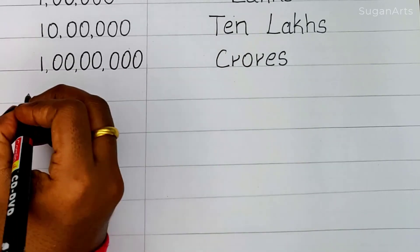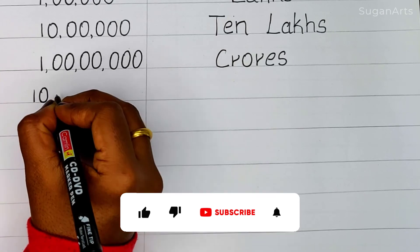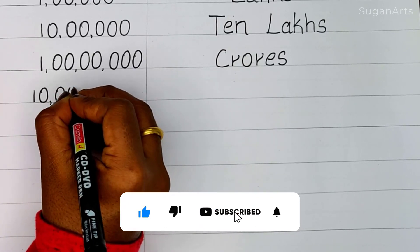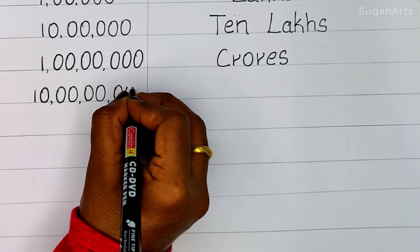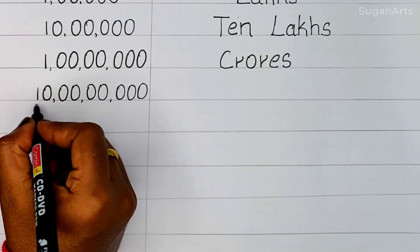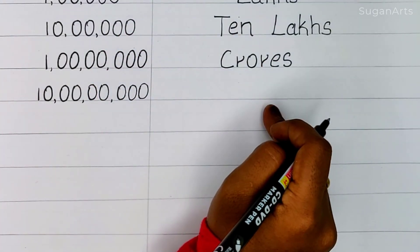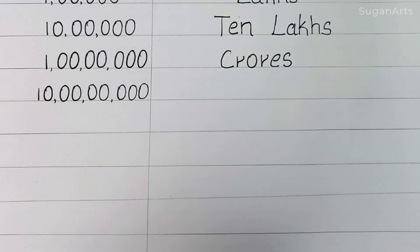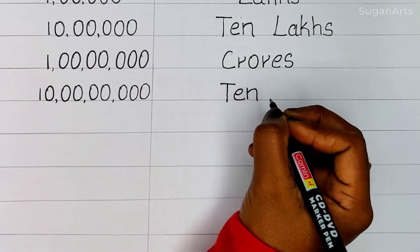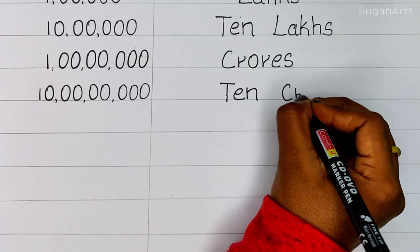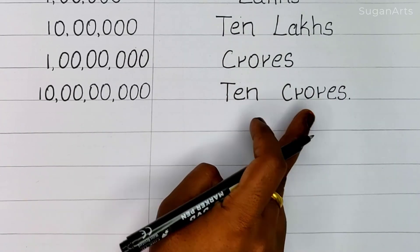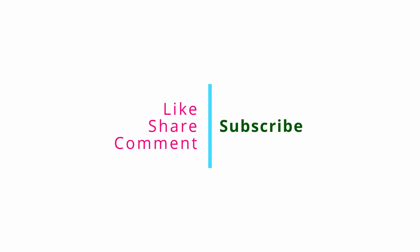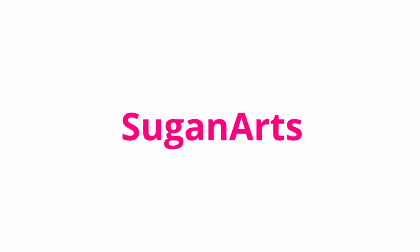So next, 1 0 0 0 0 0 0 0 0 — that is 8 zeros. In the Indian system we call it as 10 Crore. T-E-N C-R-O-R-E-S. 10 Crore. So I hope this video will be useful. For more videos subscribe to my channel, don't forget to hit the like button, and keep supporting us. Thank you so much for watching. Bye-bye!